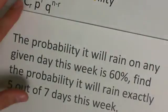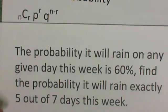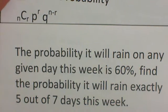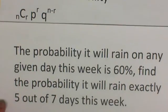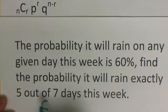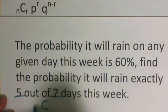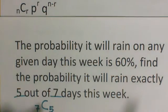Our next one. The probability it will rain on any given day this week is 60%. Find the probability it will rain exactly 5 out of the 7 days this week. To start, I'm going to put my C and I want 5 out of 7, so those are my n's and my r's. The left side is always going to be the bigger one, the right side is always going to be the smaller if that helps.